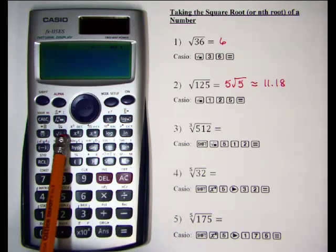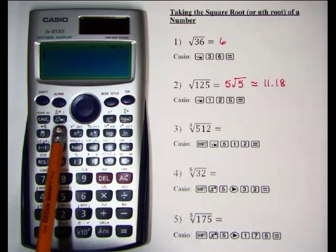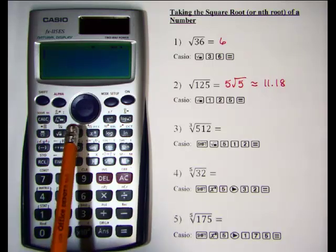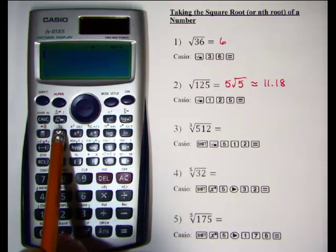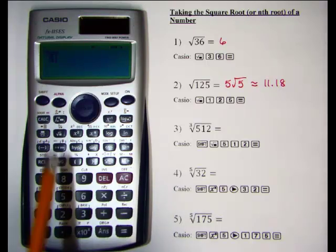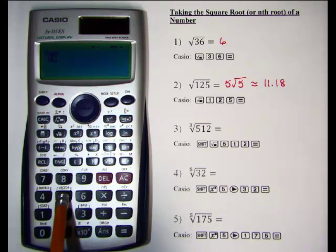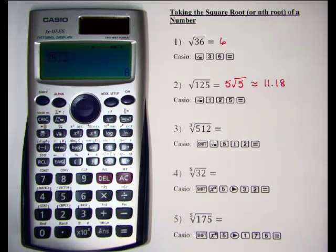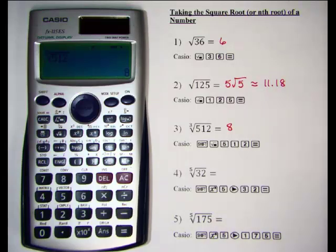The cube root is a feature located right above the square root button, shown in brown. Anytime you want to access a brown feature you have to hit your shift key first. We hit shift, then the square root key, and the cube root symbol appears. We enter 512, hit equals, and the cube root of 512 is 8.